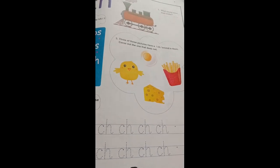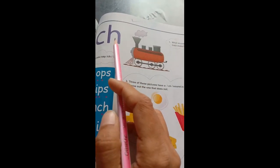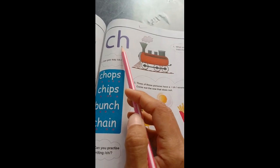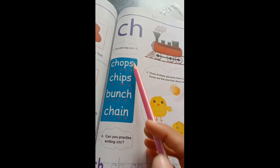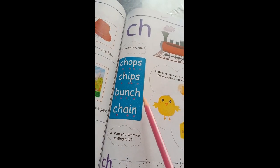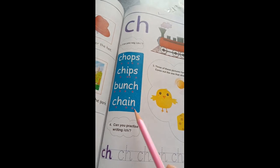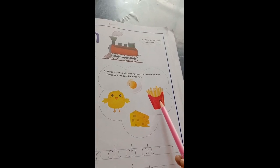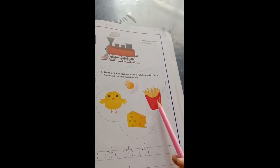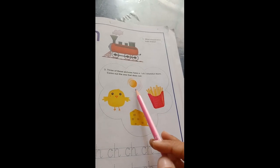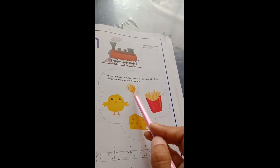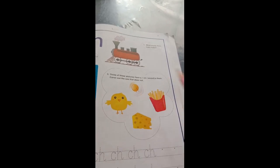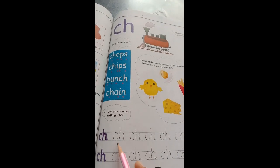And new Digraph is 217. Ch, ch, ch. Which diagraph is ch. Chops, chips, bunch, chain, chick, french fries, cheese, egg. It's not belong to digraph of ch, so do cross on the picture and write here ch.